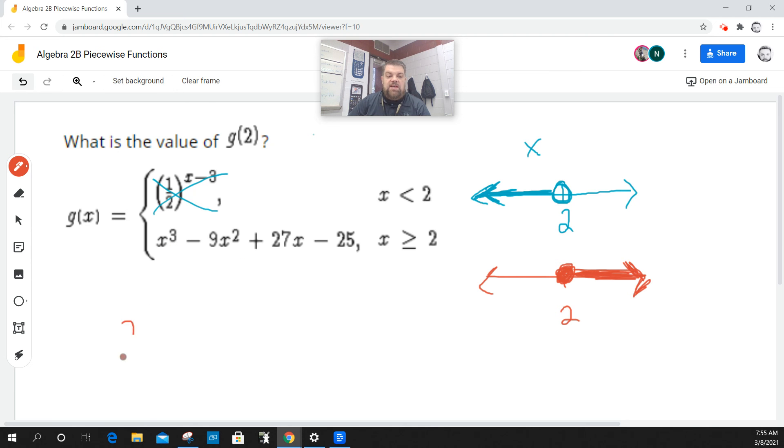Now what I'm going to do is wherever there's an x, I'm going to plug a 2. So instead of x cubed, I'm going to say 2 cubed, minus 9 times 2 squared plus 27 times 2 minus 25.